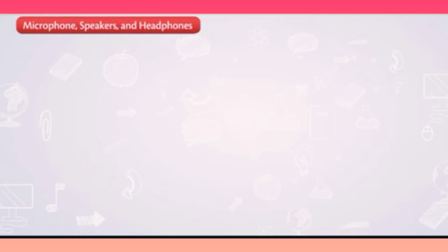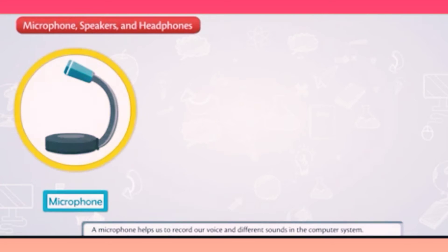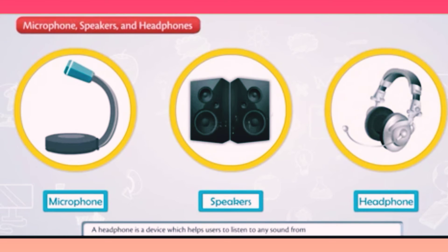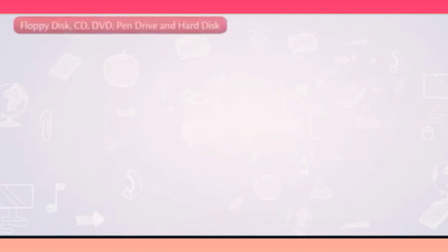Microphone, speakers, and headphones. A microphone helps us to record our voice and different sounds in the computer system. Speakers are used to listen to music and hear the sound effects stored in a computer. A headphone is a device which helps users to listen to any sound from a computer system without disturbing others.